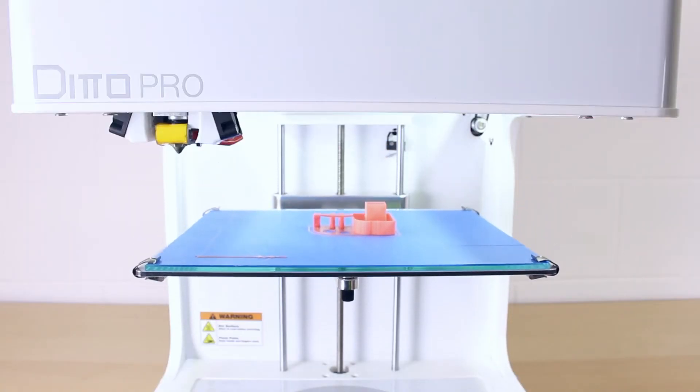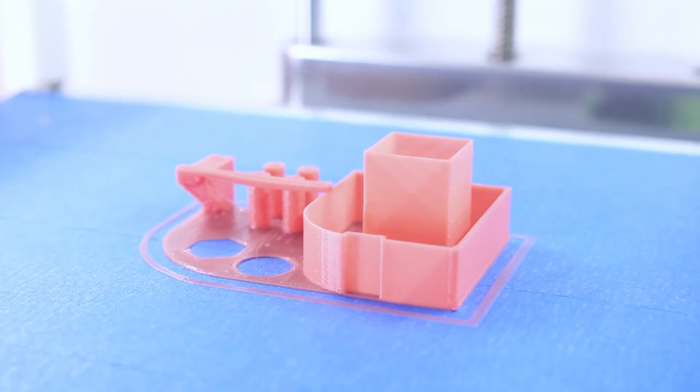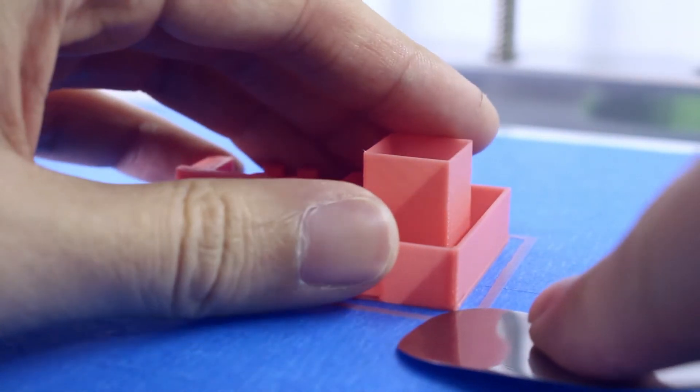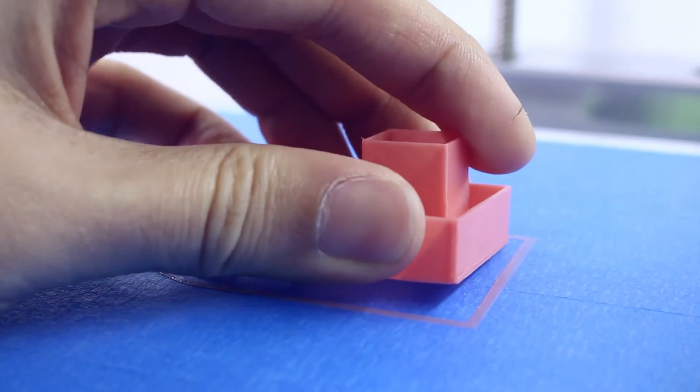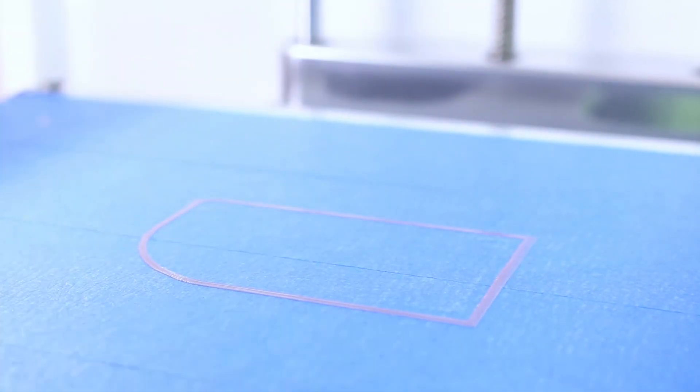Once the print is done, the print surface will lower. We highly recommend using a print removal knife to remove your print. If it is a big print, take the clips off, take your print surface off the printer, and then use your print removal knife.